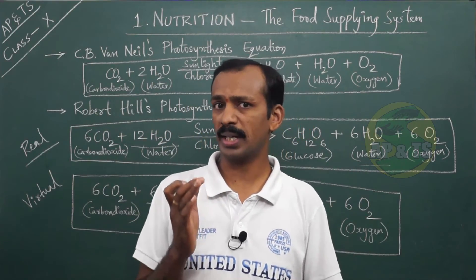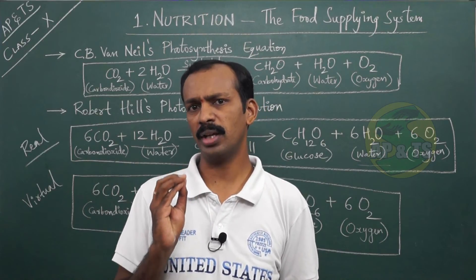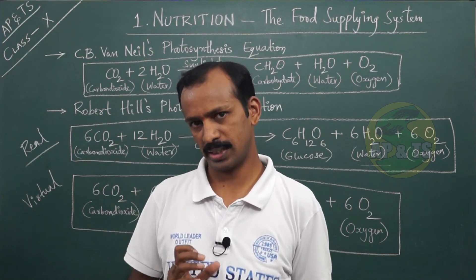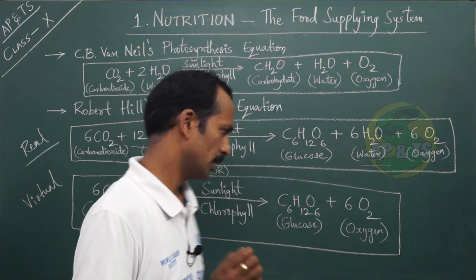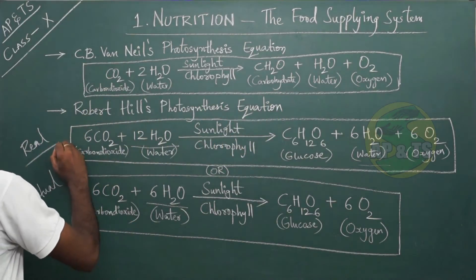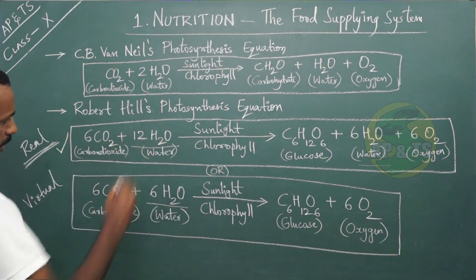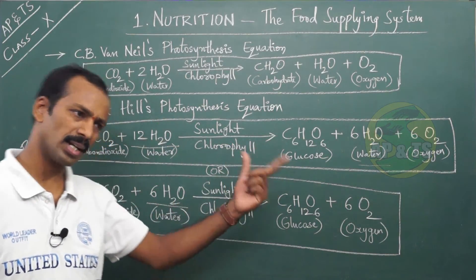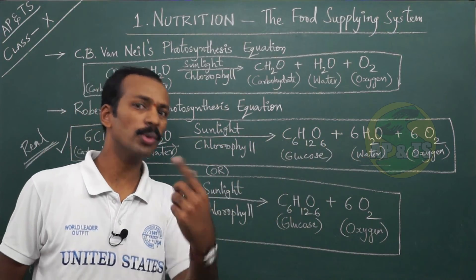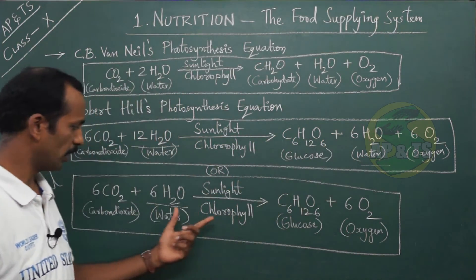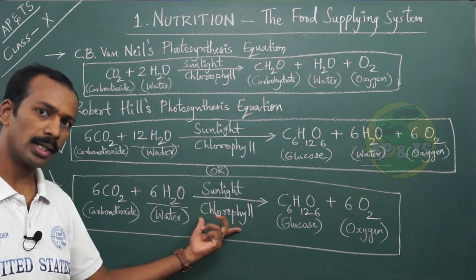In examinations, if you get a question asking to write a balanced equation for photosynthesis, write the real equation given by Robert Hill: 6CO₂ + 12H₂O → C₆H₁₂O₆ + 6H₂O + 6O₂. The simplified equation with 6 water molecules is given for better understanding only. Don't get confused between the two — for exams, use Robert Hill's equation.